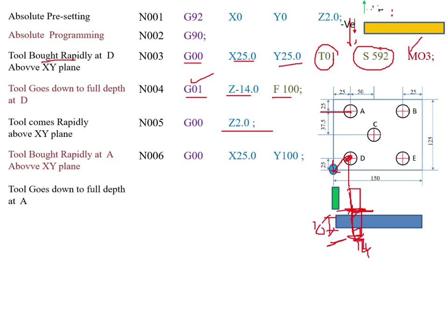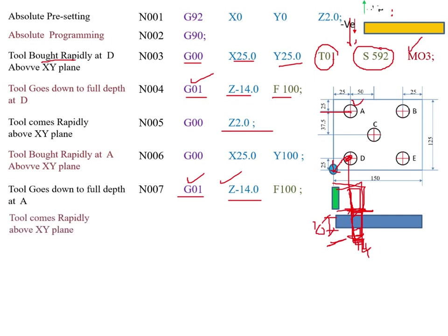Now the tool is at point A. Next, the tool goes down to full depth at A — we perform the drilling operation at Z equal to minus 14 mm. My block is N007, G01, Z minus 14, and the feed rate is F100. After drilling, the tool comes rapidly above the XY plane. So the next block is N008, G00, Z2.0.